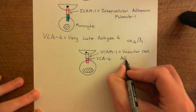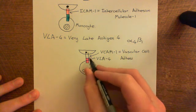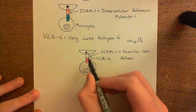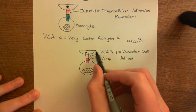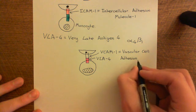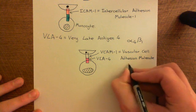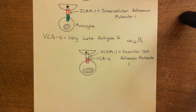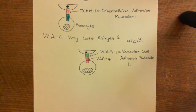When the monocyte's VLA-4 binds to the endothelial cell's VCAM-1, that tethers the monocyte to the endothelium. This promotes diapedesis of the monocyte across the endothelium into the interstitial fluid, where it will phagocytose the invading pathogen.